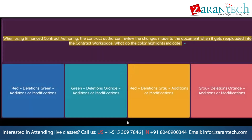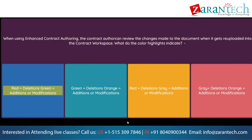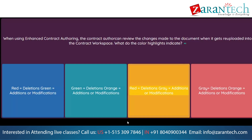Question: When using enhanced contract authoring, the contract author can review the changes made to the document when it gets re-uploaded into the contract workspace. What do the color highlights indicate? Option 1: Red equals deletions; green equals additions or modifications. Option 2: Green equals deletions; orange equals additions or modifications. Option 3: Red equals deletions; gray equals additions or modifications. Option 4: Gray equals deletions; orange equals additions or modifications.